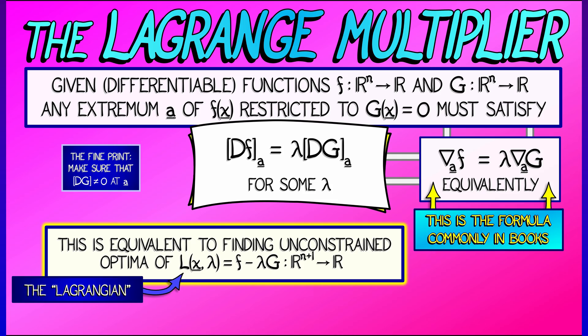This is equivalent to finding the unconstrained optima of a new function, capital L, that depends on both x and lambda.